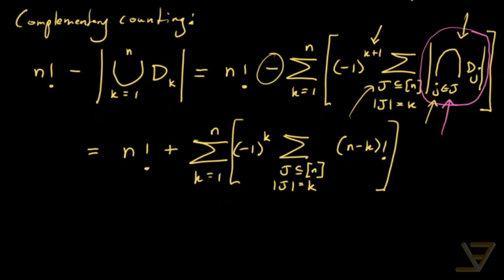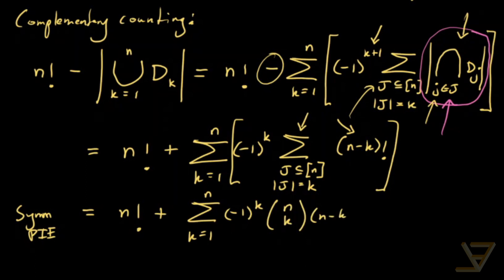And now what we know, or rather what we can invoke, is the fact that we can use symmetry. Symmetry tells us that each of these, well the number of elements in this sum is n choose k. And each of the sum is the factorial of n minus k. So we can simply write this as the sum from k equals 1 through n, negative 1 to the k, n choose k times n minus k factorial.